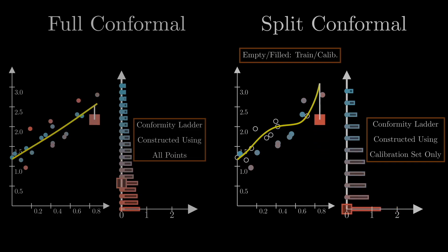With the full conformal method, all points are used in constructing our conformity ladder and their conformity varies as the square is moved around. Whereas with split conformal methods, only the calibration points and of course the test point itself are used for constructing the conformity ladder.